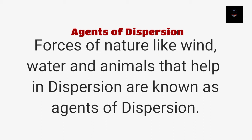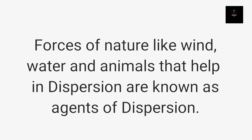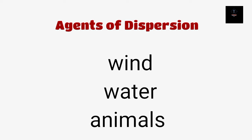We will discuss these agents one by one — how plants are dispersed by water, wind, animals, or by the plant itself. Wind, water, and animals are the specific agents of dispersion; naturally, they help in dispersion so that seeds or fruits can reach distant places.